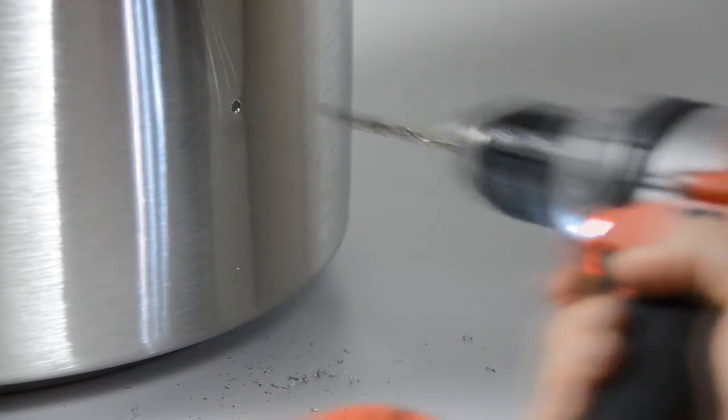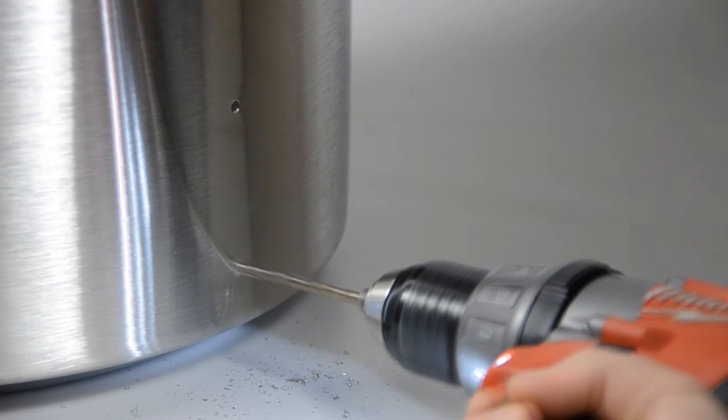Use the 3/16 drill bit at moderate speed to make a pilot hole at each center punch mark.